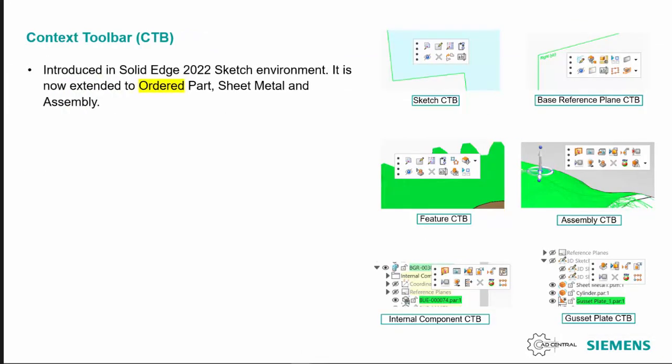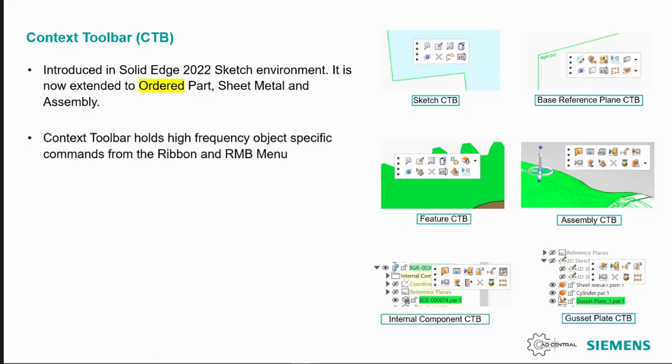The context toolbar has been added into the ordered parts, sheet metal, and assembly environments. It was originally added into the sketch environment in Solid Edge 2022. The context toolbar holds most of the high-frequency objects and generally comes up when you right mouse click on pathfinder or commands using the right mouse button selection tools.